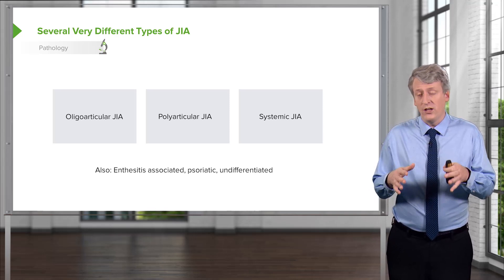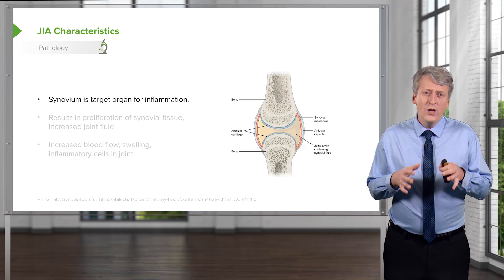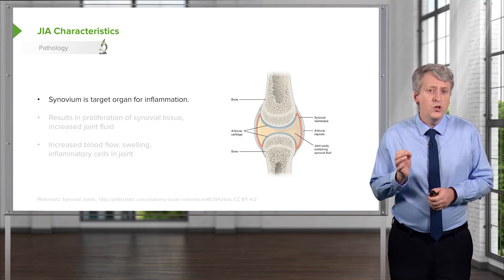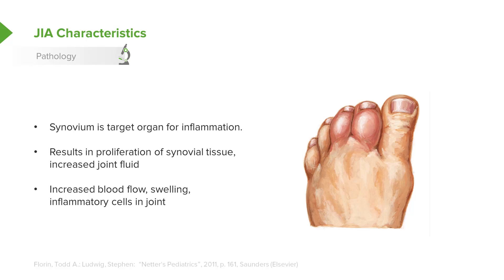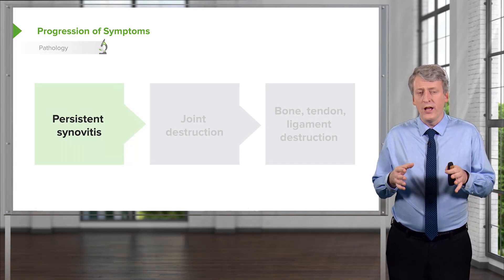JIA characteristics usually involve joint inflammation, and the synovium is the target for that autoinflammatory process. It results in a proliferation of synovial tissue and increased joint fluid. You may see increased blood flow, swelling, and inflammatory cells if you were to tap that joint. The progression of symptoms generally starts with a persistent synovitis, which then results in joint destruction, causing long-term bone-tendon-ligament problems.